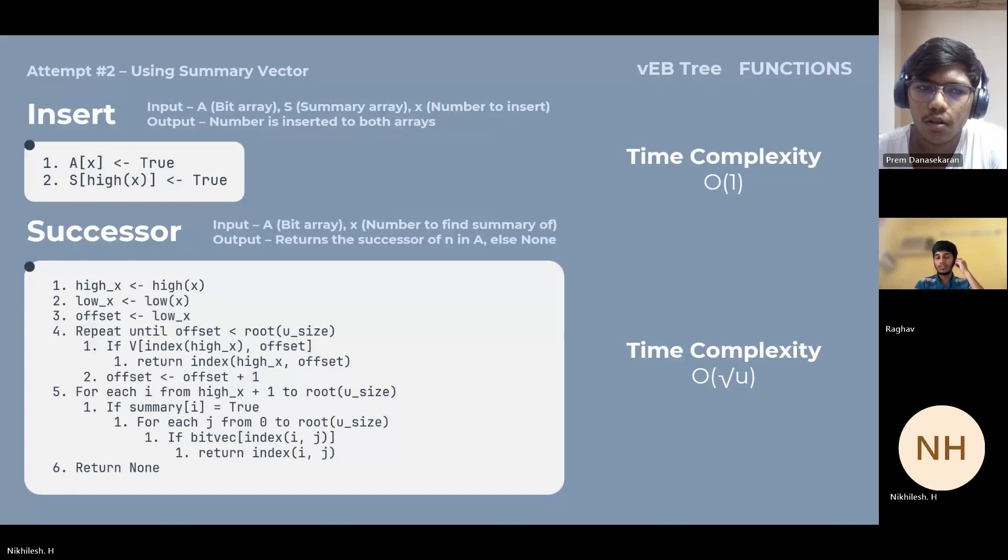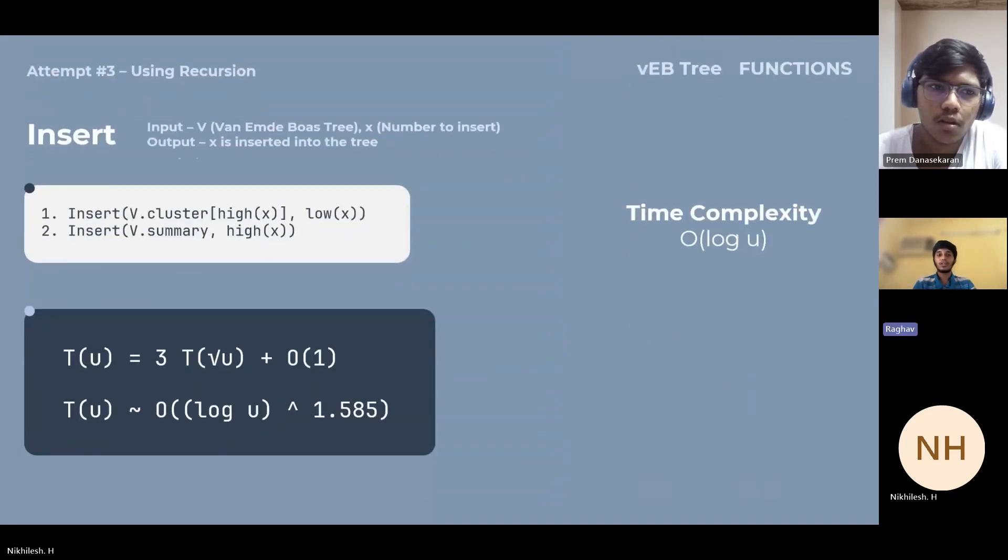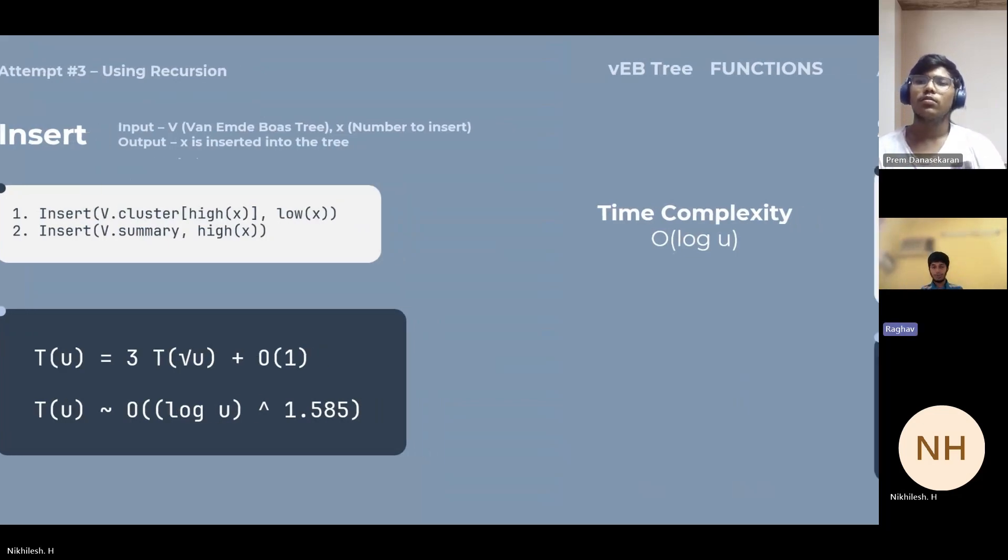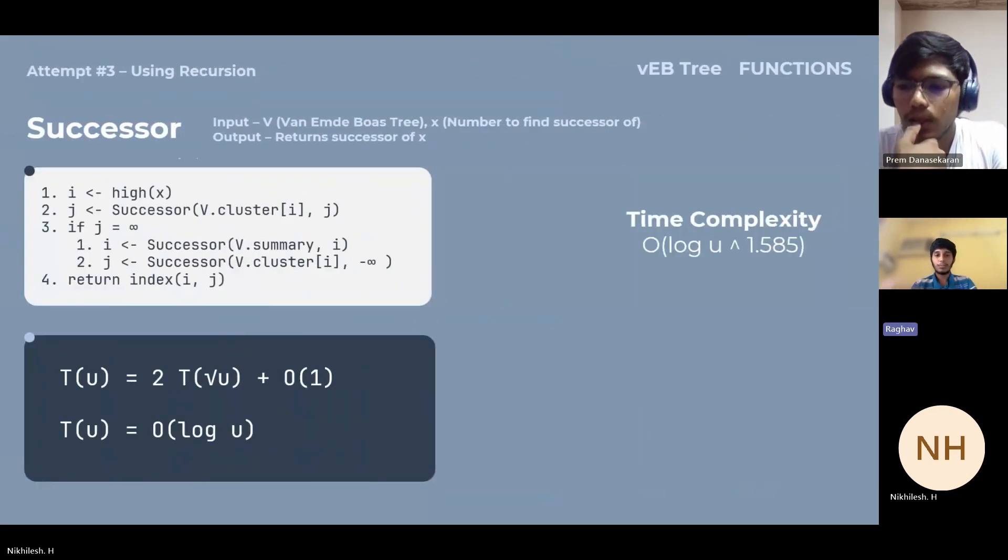The time complexity for successor goes to O(√u), whereas for insertion it remains O(u). Coming to the third attempt, which is by using recursion. Recursion optimizes the algorithm. For insertion, you're going to recursively insert in that particular cluster and then update that into the summary recursively. This has a time complexity of O(log u).